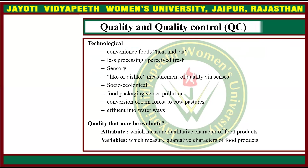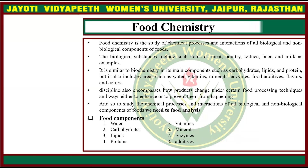Technologically, convenience of food involves heat processing with less processing perceived like fresh food. Sensory properties are very important — like or dislike measurement of quality via senses. Socio-ecological considerations include food packaging versus pollution, conversion of rainforest to cow pastures, and effluent into waterways. Quality may be evaluated as attributes, which measure qualitative characters, and variables, which measure quantitative characters of food products.